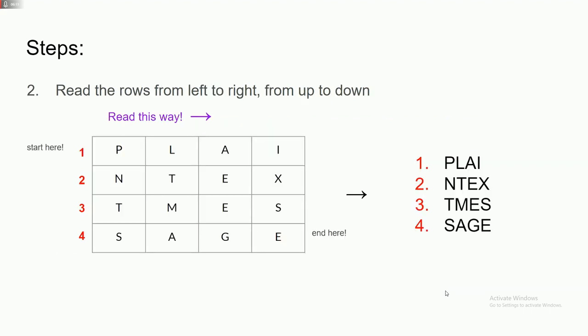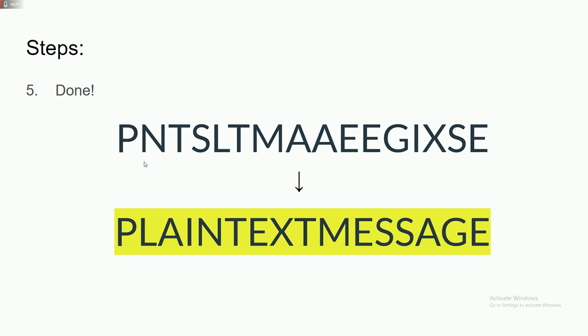And then you just read it from left to right. So start here, you end here, and you read it from left to right. So you'll end up with PLAI, NTEX, and it converts nicely from this jumbled mess back into plain text message. So that's Siddly, encrypting and decrypting.